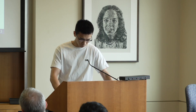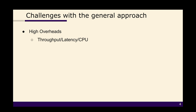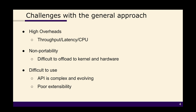The goal of my talk is to argue why the current approach is not ideal and introduce a new way of building application networks. The existing service mesh architecture is built on general network abstractions — good for flexibility but with significant downsides. It comes with high overheads in throughput, latency, and CPU usage; it has non-portability problems making it hard to offload to the kernel or hardware; and the API is complex and constantly evolving.